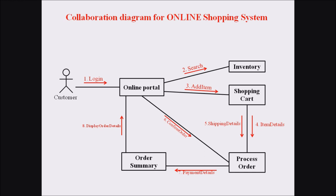This is how we represent the collaboration diagram for the online shopping system. It shows the interactions between the actor, objects, communication, and message passing and linking between these objects and actors. Previously the sequence diagram shows different sequences of activities, but in the collaboration diagram the serial or sequential order between actors and objects is portrayed through numbered messages.